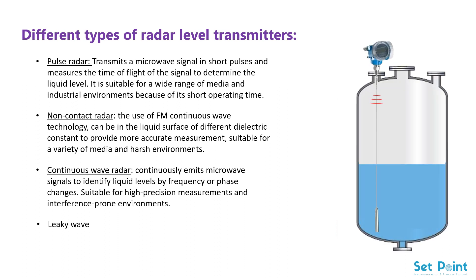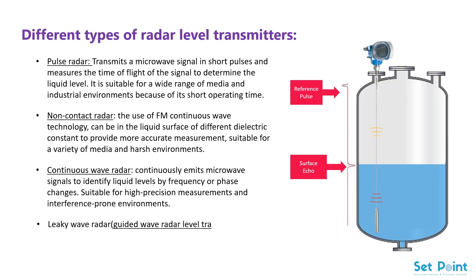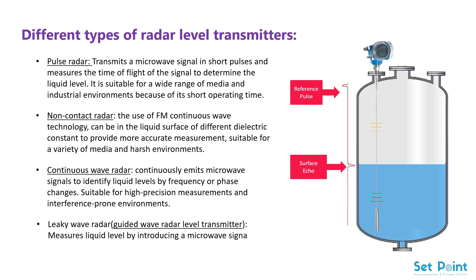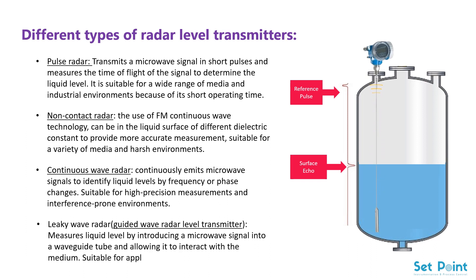Leaky wave radar, also known as guided wave radar level transmitter, measures liquid level by introducing a microwave signal into a wave guide tube and allowing it to interact with the medium. It is suitable for applications with small-level variations.